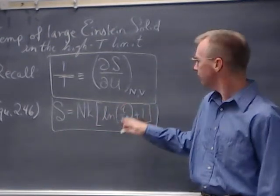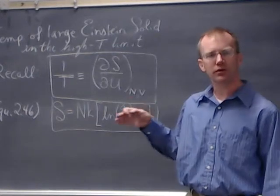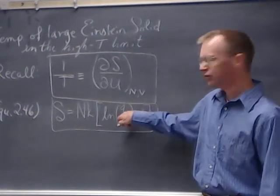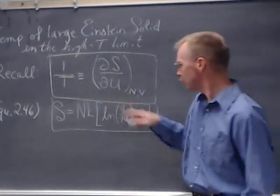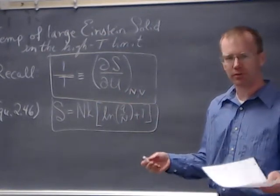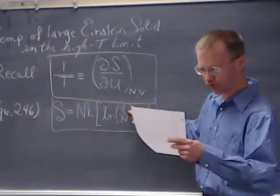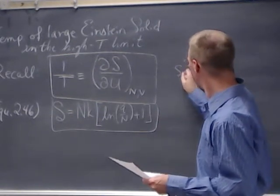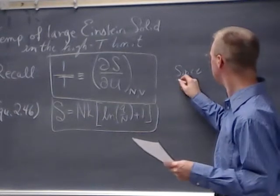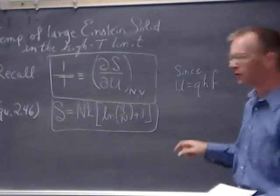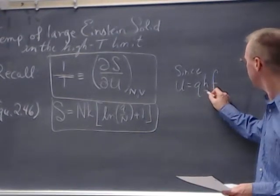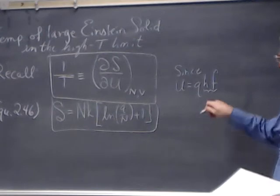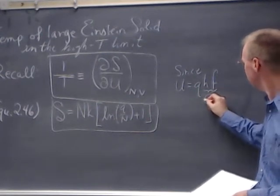Remember that we've been starting with Einstein solids using Q, the number of quanta of energy. But in the real world, what we really want to measure is U — capital U — which is energy measured in joules or electron volts. Since U equals Q times hf, where Planck's constant times frequency is a unit of energy, we'll call that epsilon.